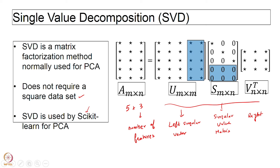If you do SVD on a square matrix, the singular value matrix is simply the diagonal matrix of eigenvalues, and the left and right singular vectors are the eigenvector matrices. For an M-by-N matrix — in this case 5 by 3 — we have 5 data points and 3 features. We get a U matrix of size M×M (5×5), a diagonal singular value matrix with 3 singular values, and a V-transpose of size N×N (3×3).